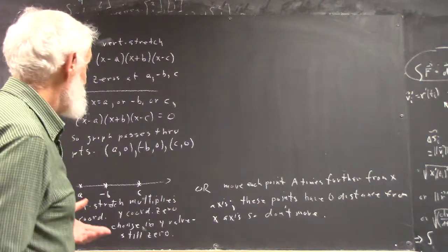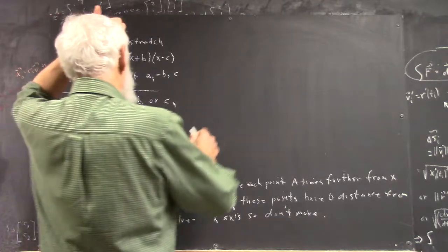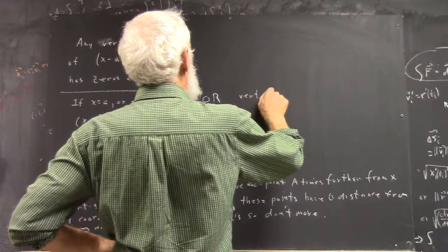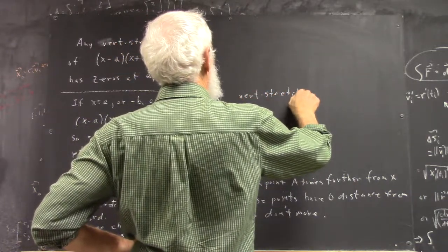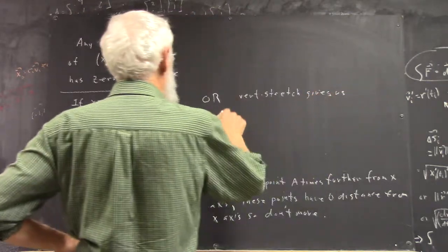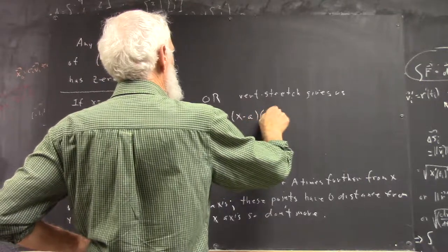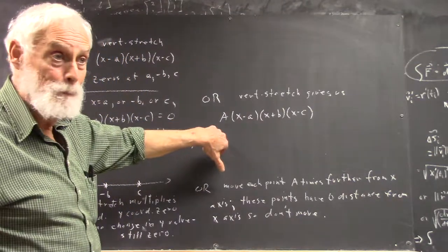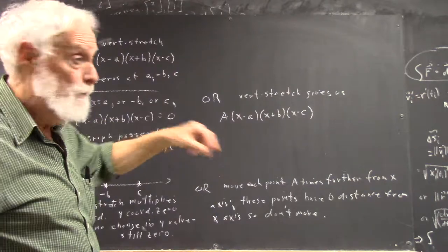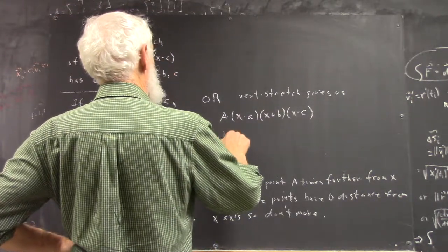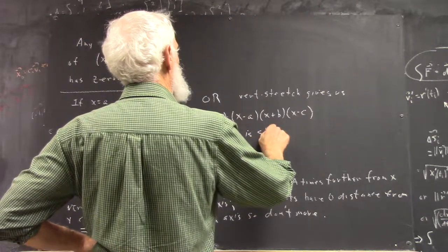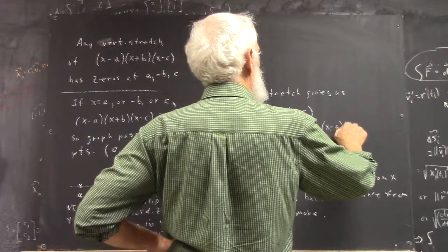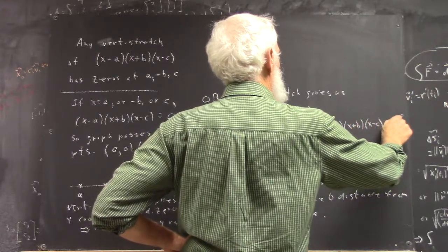There's one more way to say this, not with reference to the graph. A vertical stretch gives us this, which is still zero if (x minus a) times (x plus b) times (x minus c) is zero.